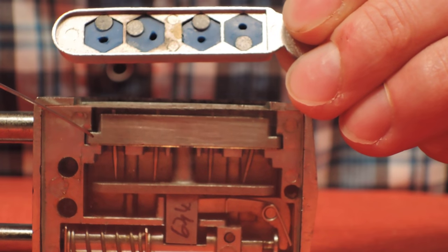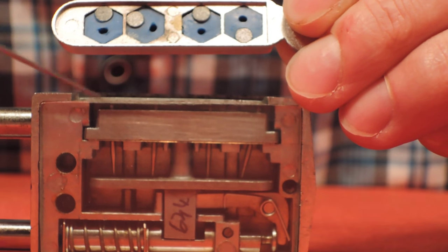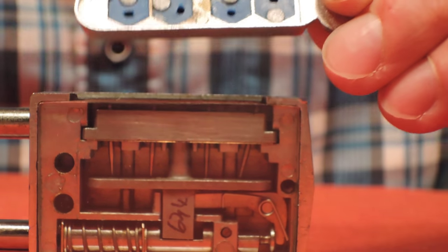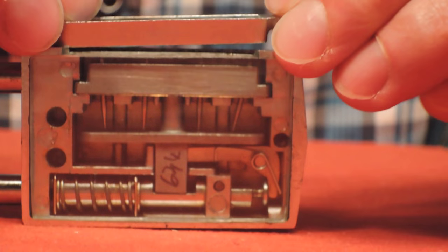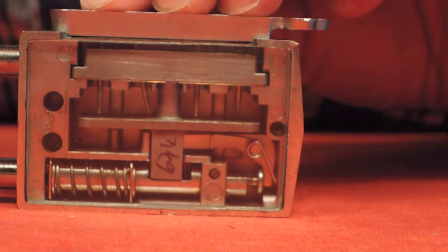These magnets will pull on the pins that pivot the pins inside of the lock. Let's put the key on the lock and we see that the pins are now in position.